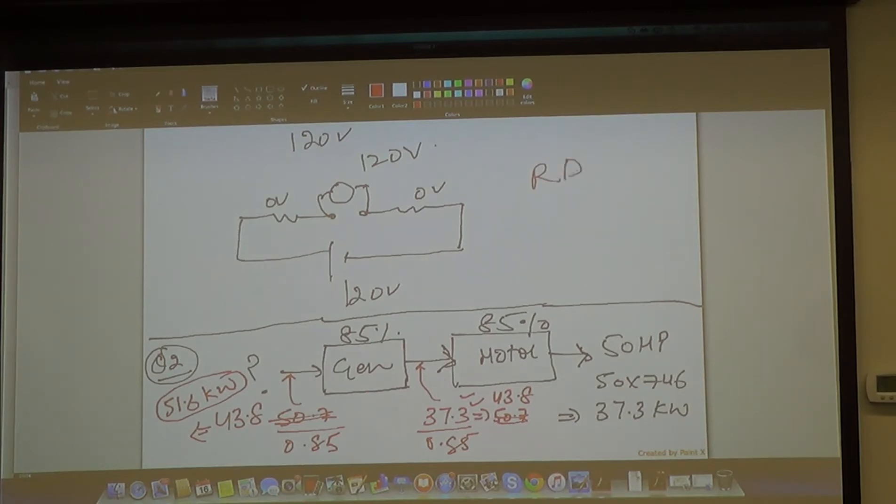RDQP. What does that mean? Read the damn question properly. That should tell you that you have to read it properly because it says each machine. It doesn't say one machine.